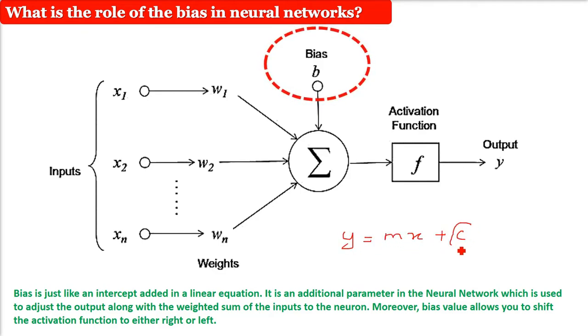This c we are calling as an analogy to our bias. This is the additional parameter in the neural network which is used to adjust the output along with the weighted sum of the inputs to the neuron. The bias value can shift the activation function to right or left.